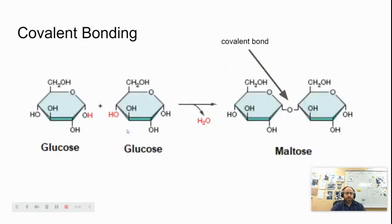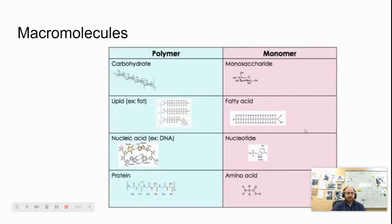Two glucose molecules can be joined together through a covalent bond to form maltose, taking on different chemical properties in the process. The different macromolecules we'll talk about in class are carbohydrates, lipids, nucleic acids, and proteins — each made up of individual pieces. Carbohydrates are made up of monosaccharides, lipids of fatty acids, nucleic acids of individual nucleotides, and proteins of individual amino acids.